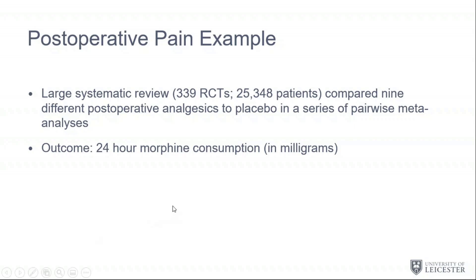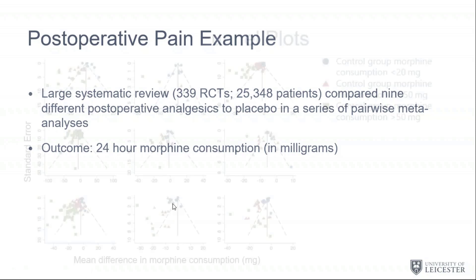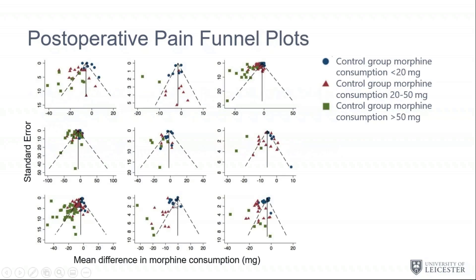Suzanne gave you a crash course in ways to detect publication bias via funnel plots and associated methods. Here are the plots from those 339 trials for the nine different treatments — one funnel plot each. Please ignore the different symbols for now and just consider each dot as representing a trial.